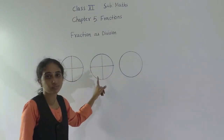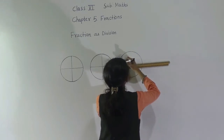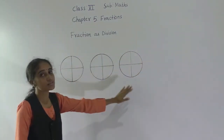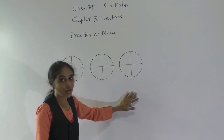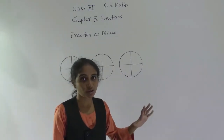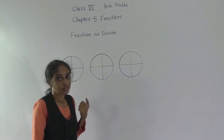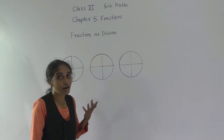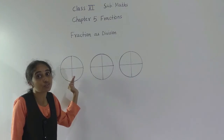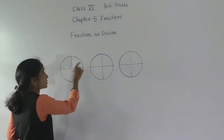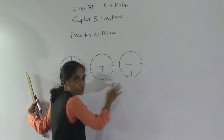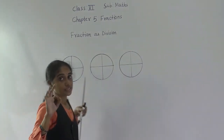Each one of them will get one fourth part from this. 4 students to distribute — 1 part for 1 student. Again from the second pizza, I will make 4 equal parts. And again from the third pizza, 4 equal parts. So now, how many total parts did I get? 12 total parts. 4 students, so each student will get 3 parts. 4 threes are 12. Every student got 3 parts — that is three fourths.